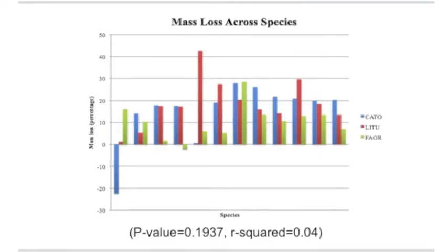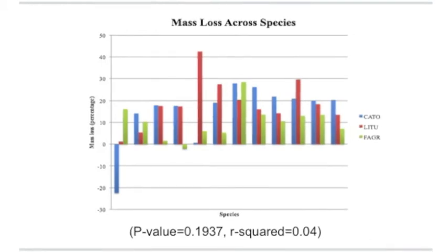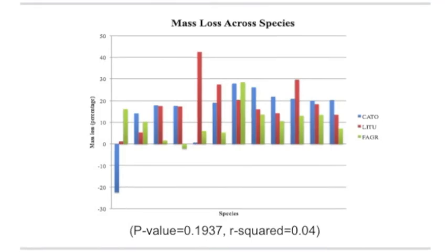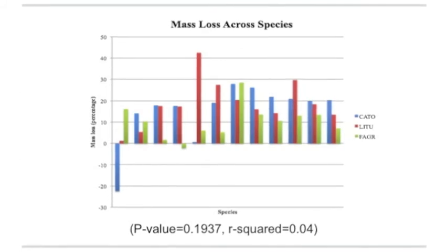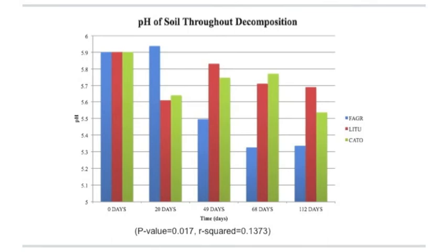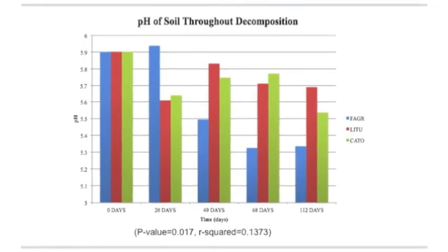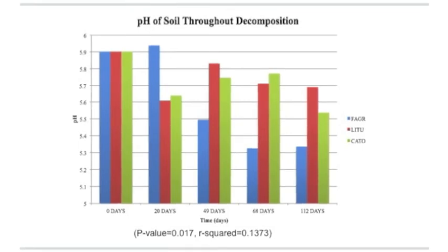While microbial analysis didn't necessarily provide the clearest results, the mass loss and pH data did. In this graph, you can see the mass loss across species. While there was an overall trend of decaying as time went on, it was not significant based on species, as evident by the p-value of 0.1937. On the other hand, species was significant in terms of pH change, as evident by the p-value of 0.017, showing that species were significant in the changes in pH that were observed.